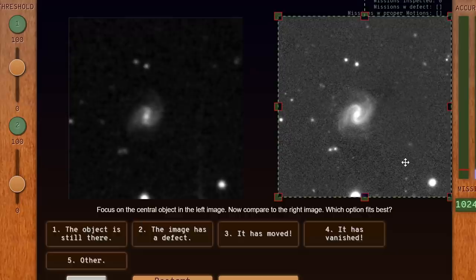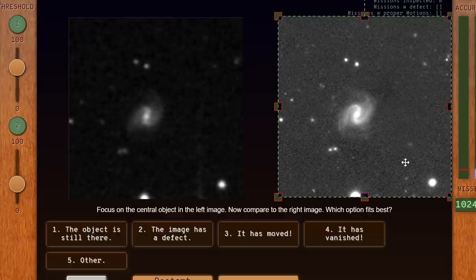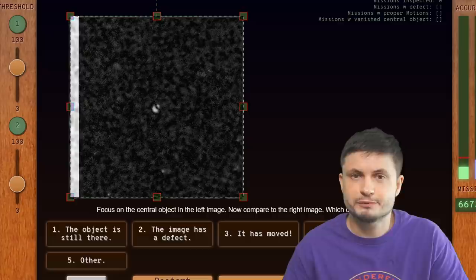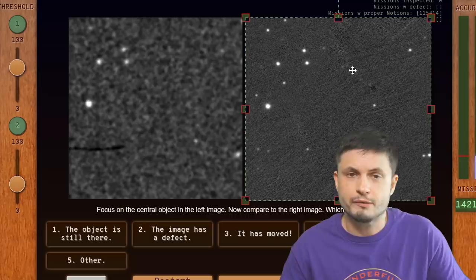So in this particular case, the object is definitely still there. So some objects like this one right here are not going to be stars, they're going to be galaxies. These ones are relatively easy to identify and relatively easy to confirm that this is still there as well. And that's basically kind of all you have to do. Now it's not a super fun game, but it definitely helps the scientists to go through those 150,000 candidates.